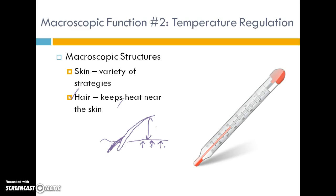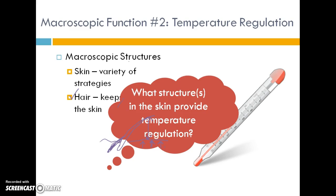At the level of skin and temperature regulation, there are several different structures. The skin has sweat glands to help cool us off, a vast supply of blood vessels that can control temperature, and a layer of fat that helps keep body heat in. We'll take a closer look at those later on.